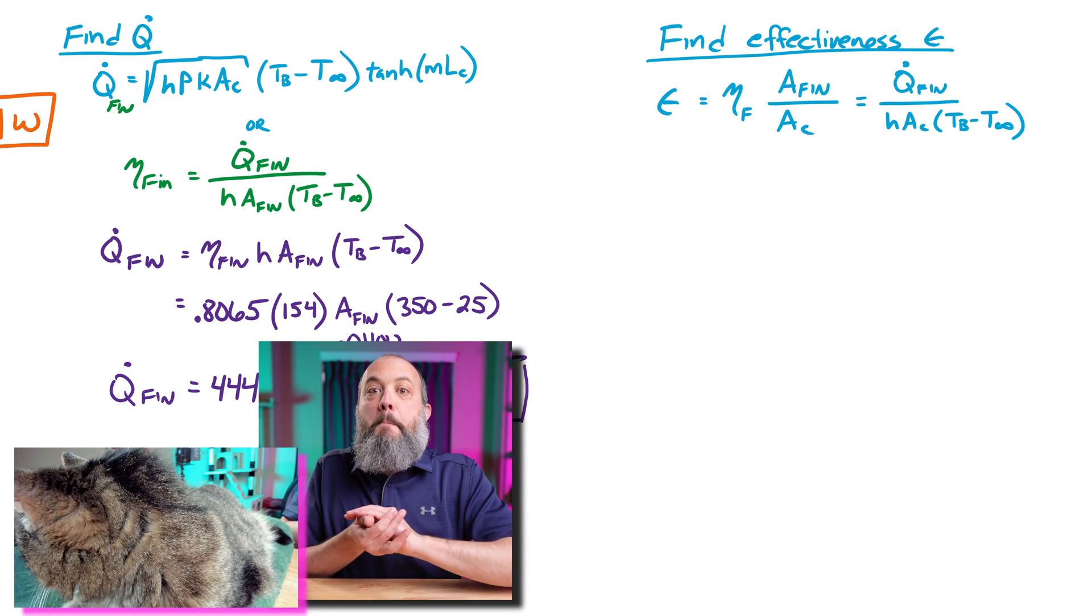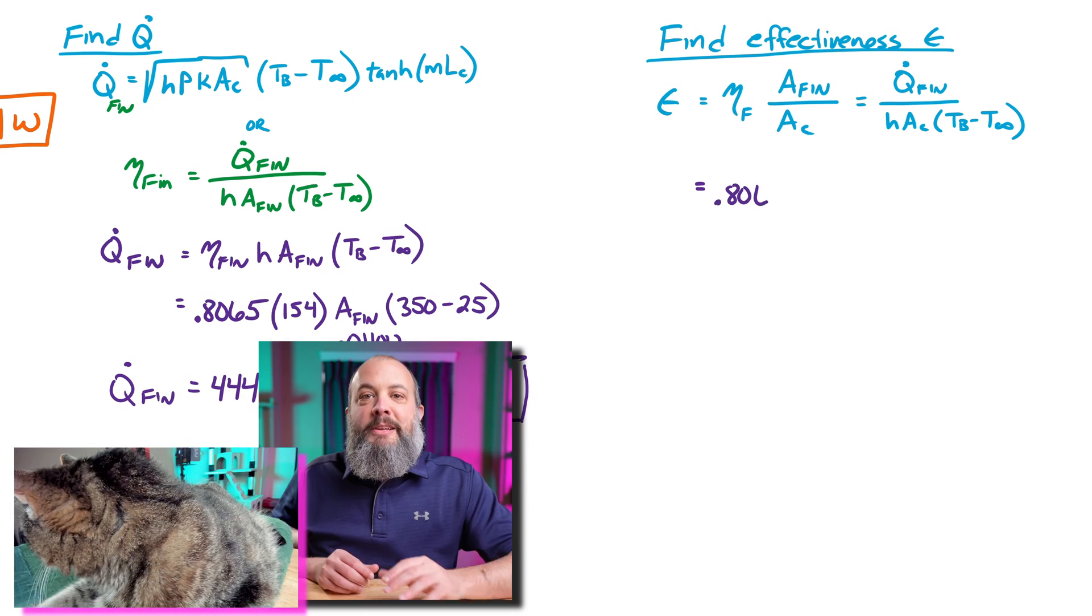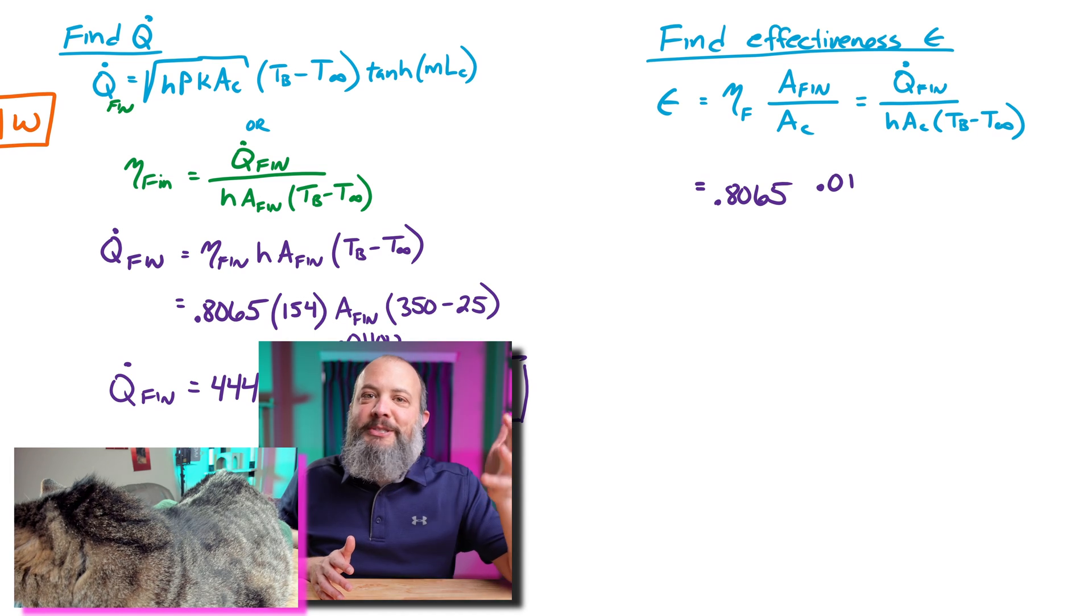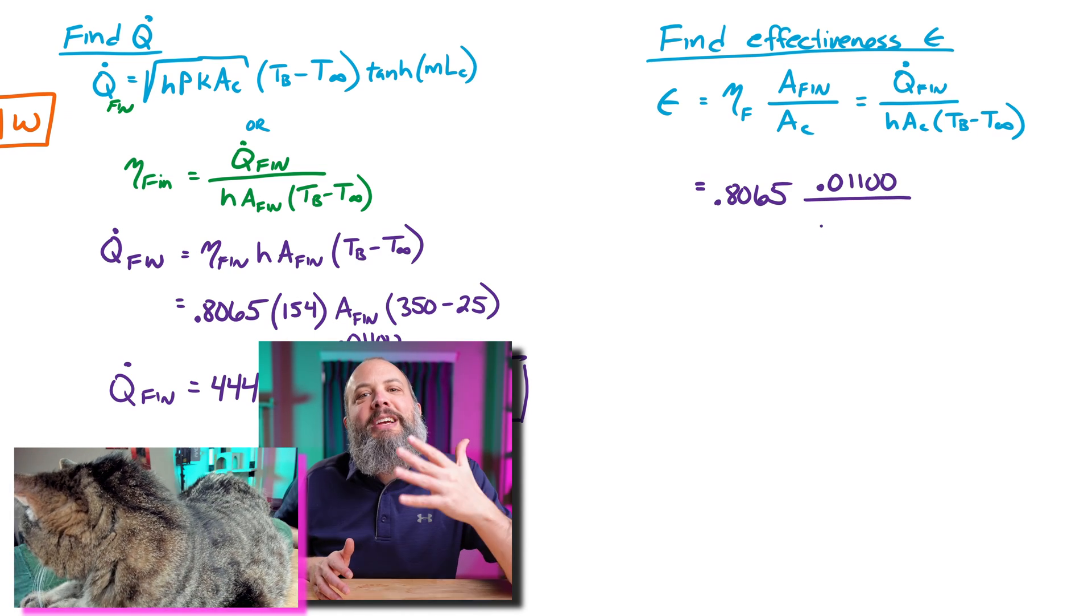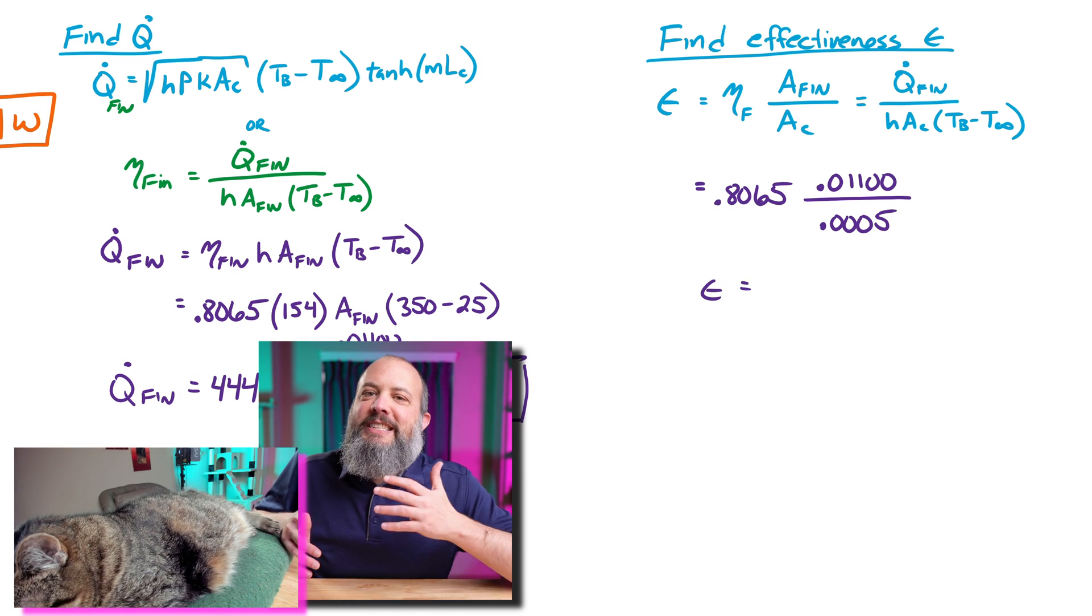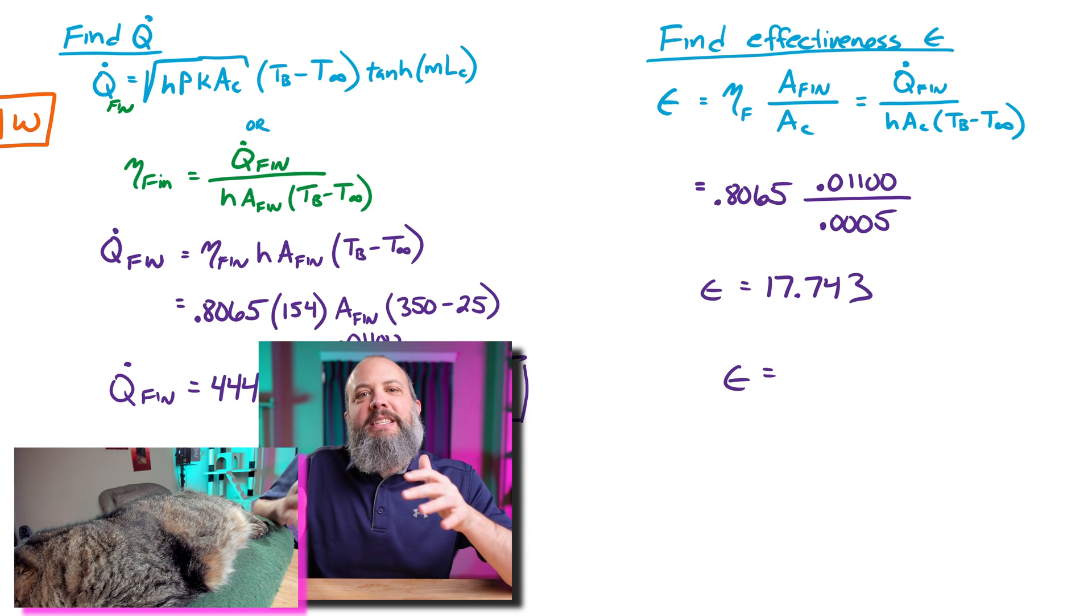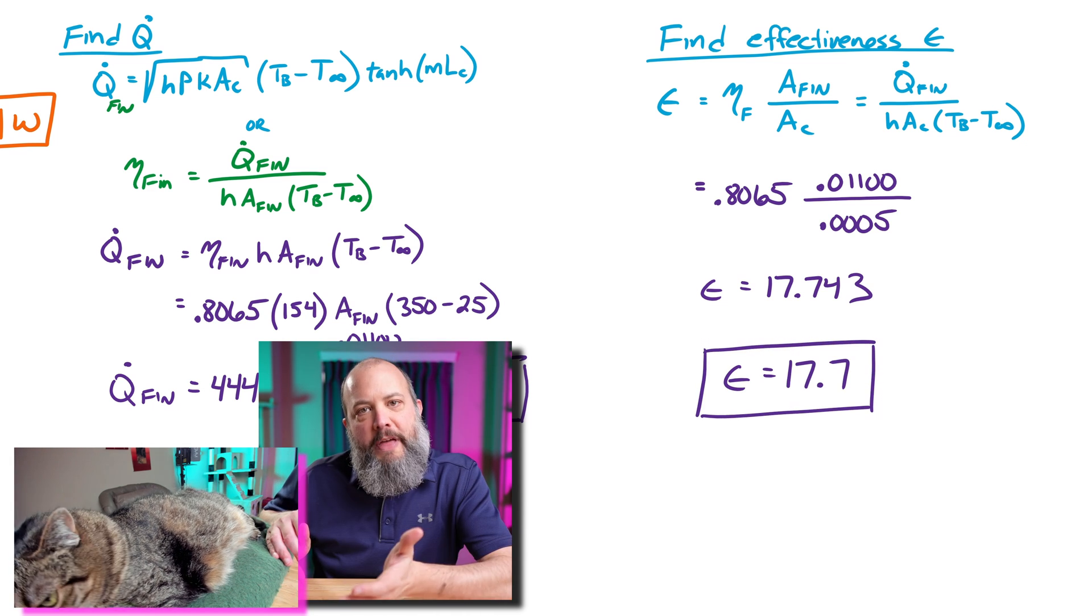So 0.8065 that we already calculated, the 0.011 was the surface area of the fin and 0.0005 cross-sectional area of the fin. That gives us a fin effectiveness of 17.7, meaning by adding this fin we get 17.7 times more heat transfer than we would get without it.